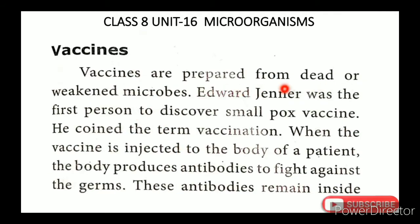Vaccines are prepared from dead or weakened microbes. Edward Jenner was the first person to discover a smallpox vaccine. He coined the term 'vaccination'. When the vaccine is injected into the body of a patient, the body produces antibodies to fight against the germs.